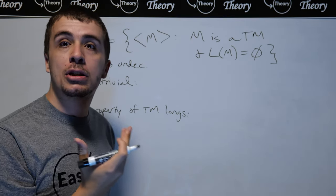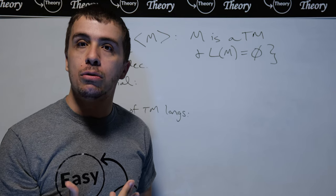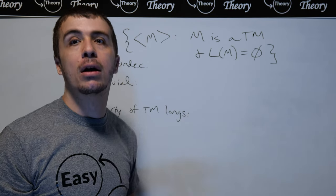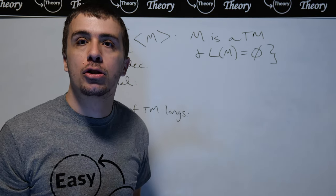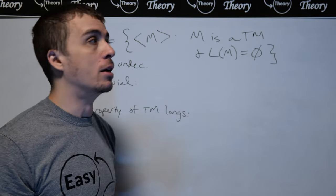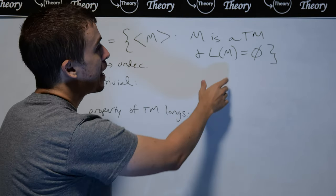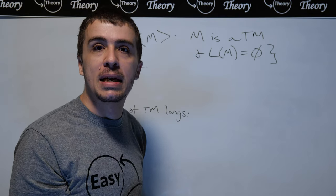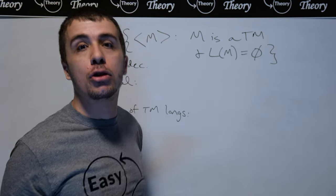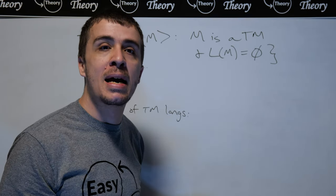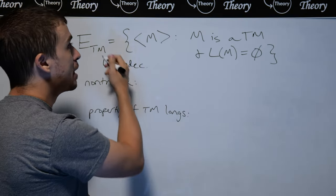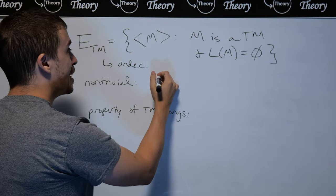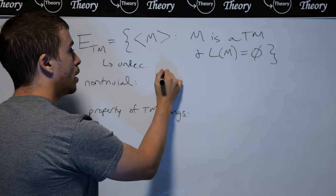To show that it's non-trivial, all you need to do is find some Turing machine that's in there and another Turing machine that is not in there. Namely, I've got to find a Turing machine whose language is empty, and another Turing machine whose language is not empty, because we're dealing with the emptiness for Turing machines problem. So what's an example of a Turing machine that's in there?